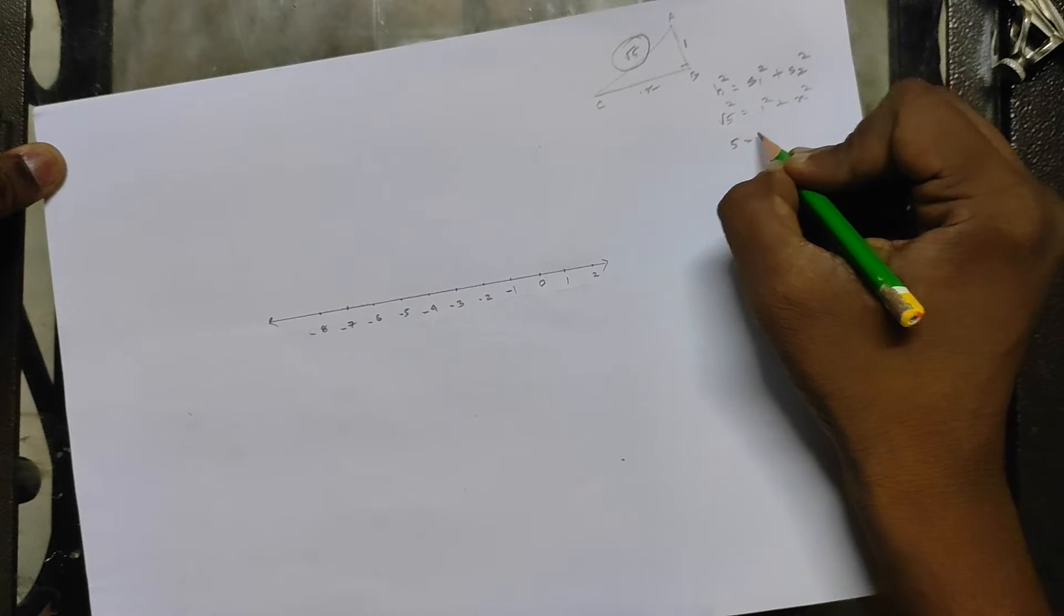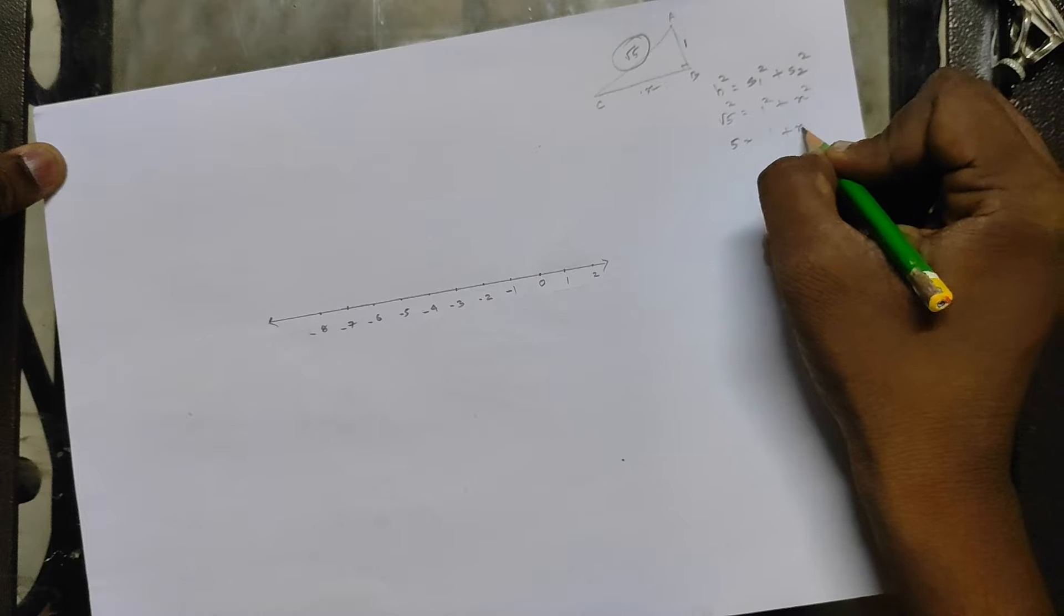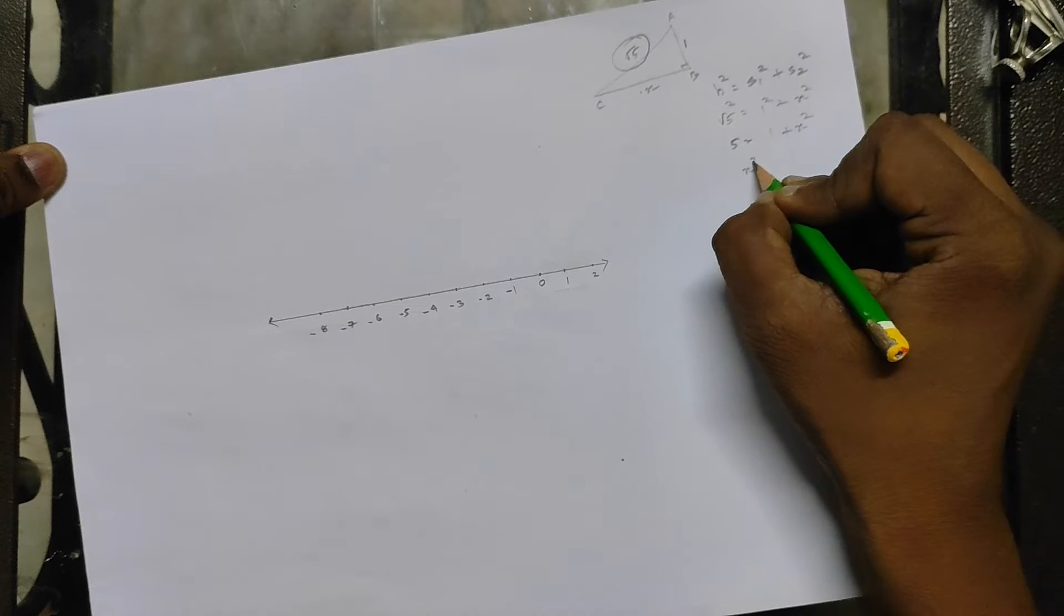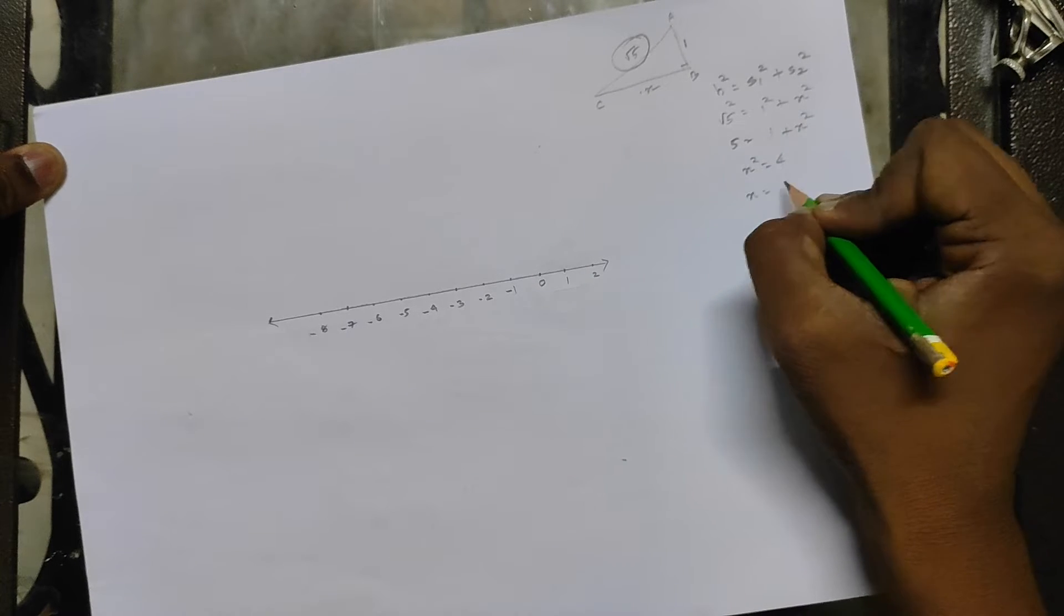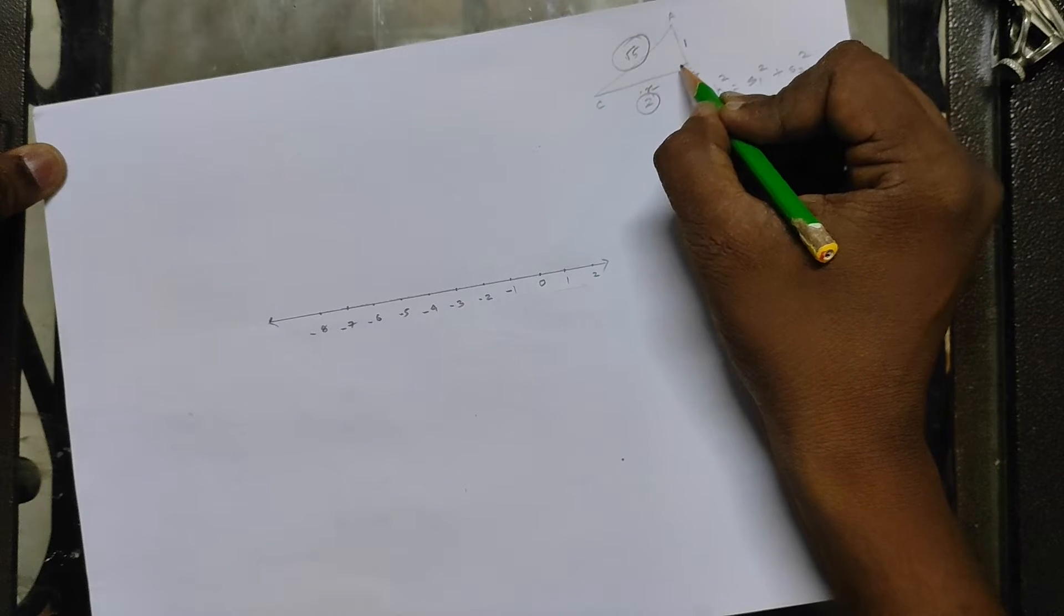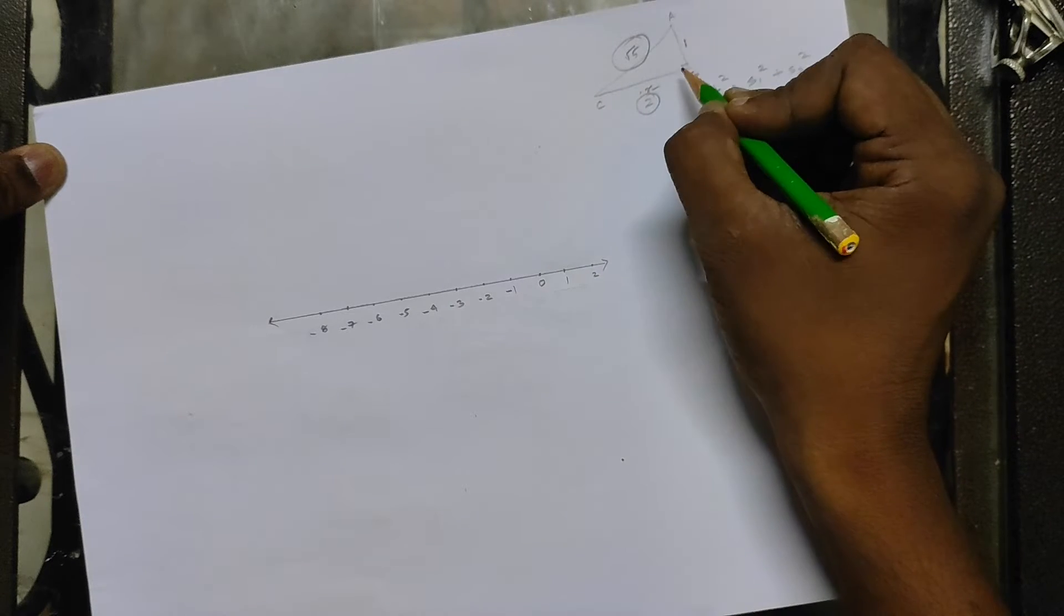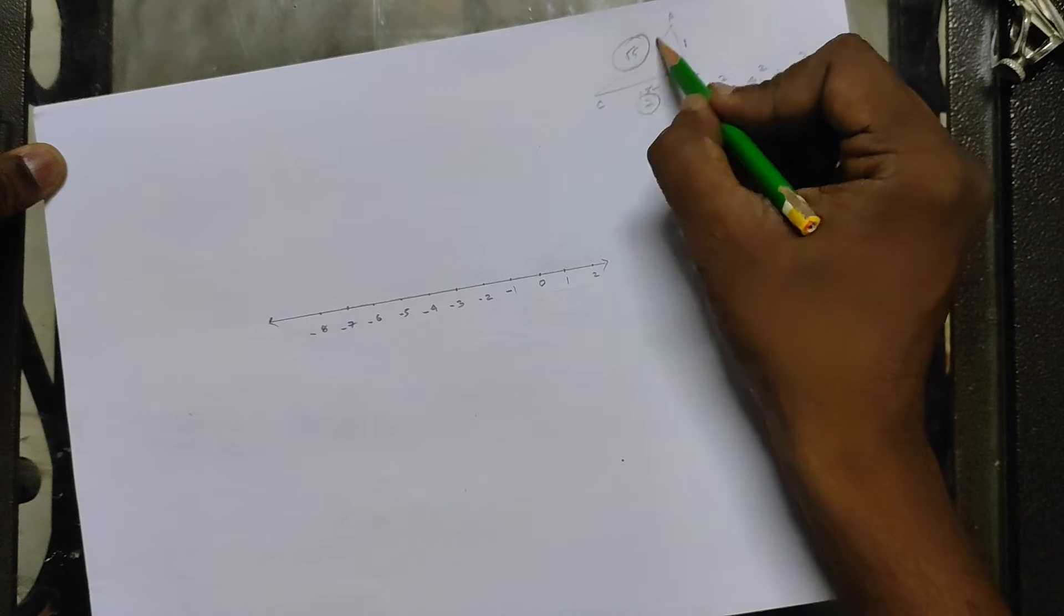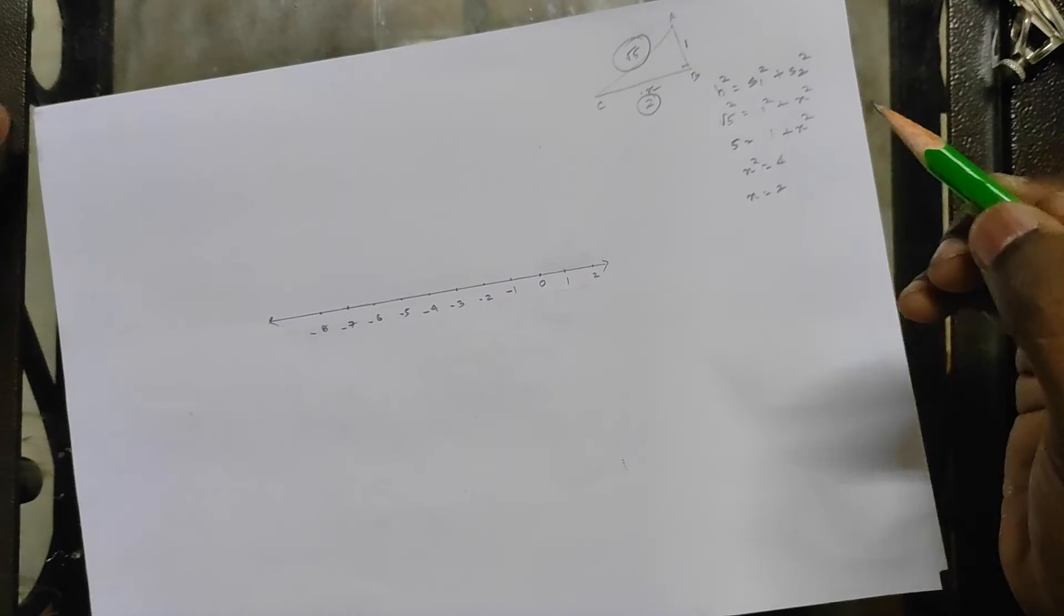So root 5 square is 5, one square is one plus x square. So I'll get x square as four, so x as two. Interesting. So that means one of the side should be two centimeter, the other one as one centimeter. So if I'm going to take this, then I will get my hypotenuse as root 5.